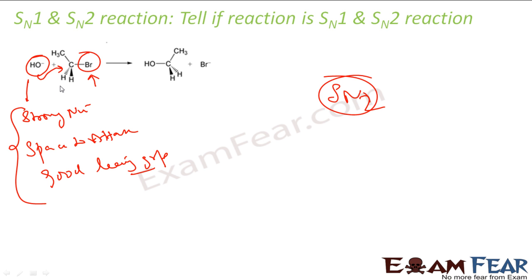Looking at another reaction: there is good space to attack, this is a strong nucleophile, plus Br minus is a good leaving group because its conjugate is a weak base. These three factors — strong nucleophile, space for back-side attack, and a good leaving group — indicate this is an SN2 reaction.